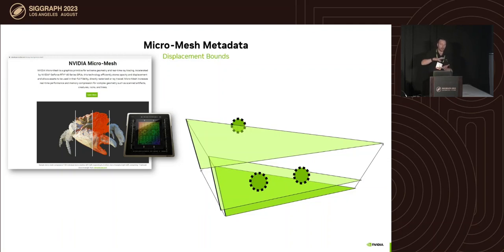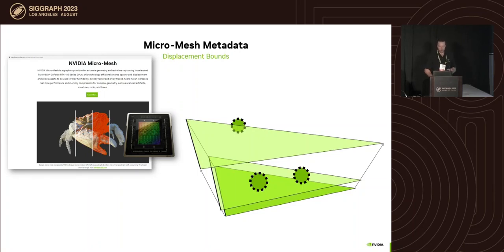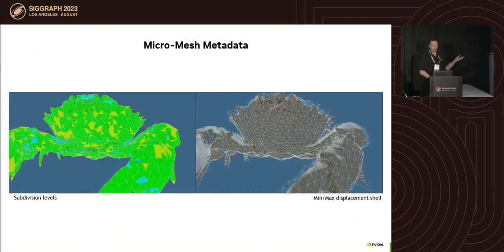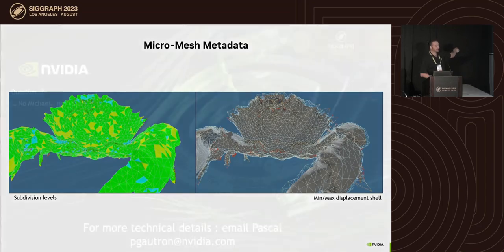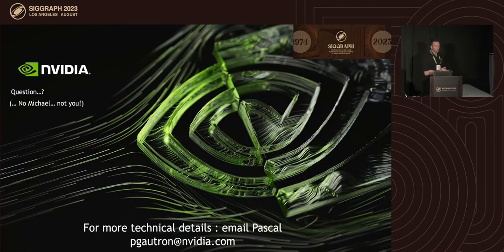Using all the surviving and killed vertices together, you can evaluate positions and properly size the shell — a prism bounding box — that surrounds the mesh for displacement. That's what you see in the crab example: the shell inside which displacement will occur.